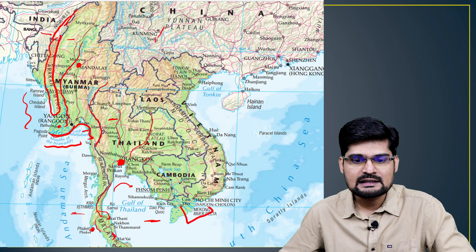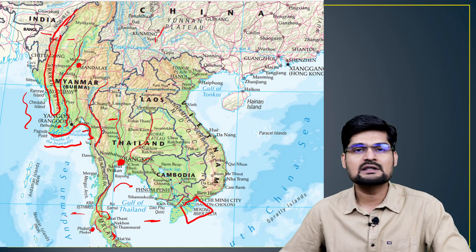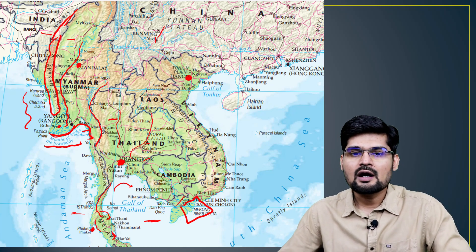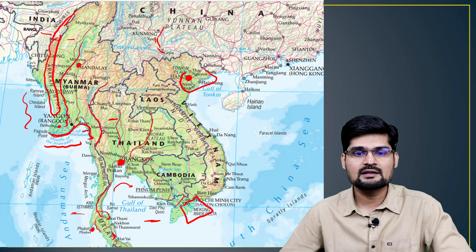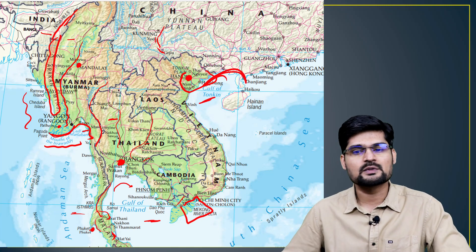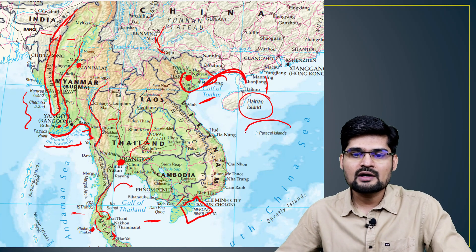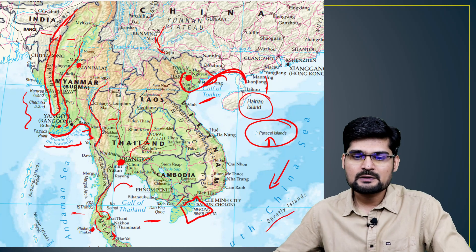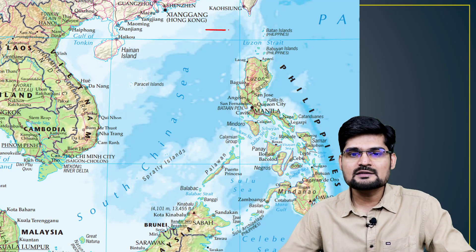Going from the Andaman Sea to the Gulf of Thailand region, this delta area is the Mekong delta near Ho Chi Minh City — the southern part of Vietnam and capital of South Vietnam. In North Vietnam, Hanoi is very important, where China also has significant influence in this particular area — the Gulf of Tonkin. Here is Hainan Island of China, and further you have smaller islands called the Paracel Islands and the Spratly Islands in the South China Sea.